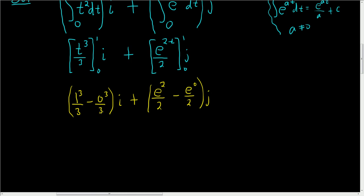1 cubed is 1, so this is just going to be 1 third i. And then here, we're going to get plus, parentheses, e squared over 2, minus, and e to the 0 is 1, so we get minus 1 half j. That is the final answer. I hope this helps.